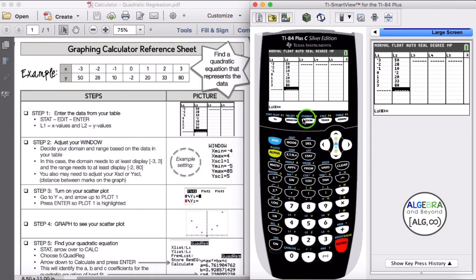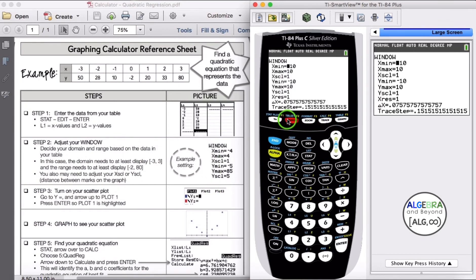Adjust our window. So we're going to go to WINDOW, and it says decide your domain and range based on the data in your table. For our domain, our X values, we want to look at our minimum value for X, and it looks like it's negative 3. Our max value is 3, so I want to make sure that at least I will be displaying negative 3 to 3. I'm going to choose negative 4 as my min and 4 as my max, just so it's a little bit outside of our data values.